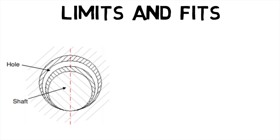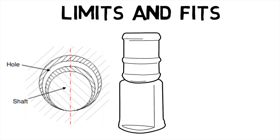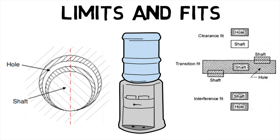The term limits, or limits of size, refer to the two extreme permissible sizes for a dimension of a part between which the actual size should lie. The largest permissible size for a dimension is called its upper limit, whereas the smallest size is called the lower limit.